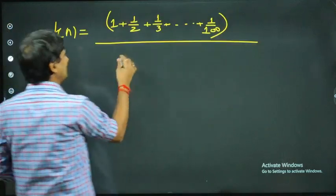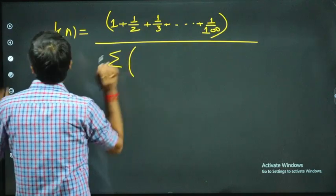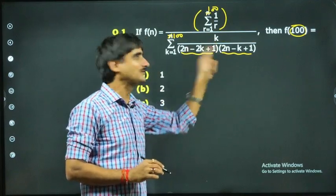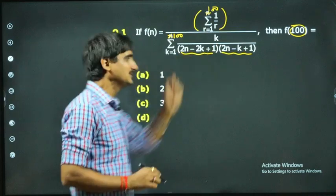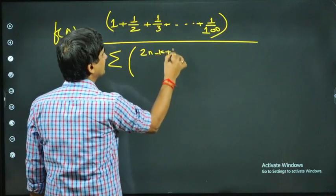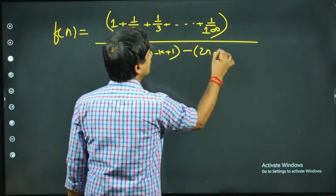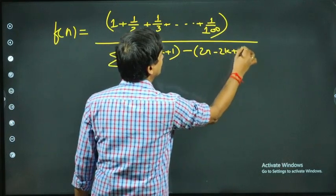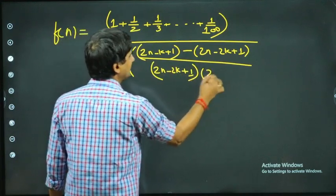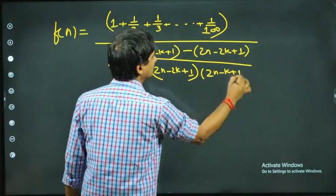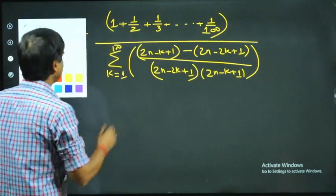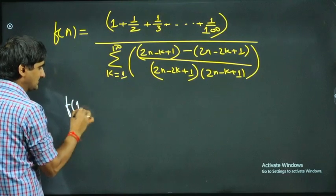For the denominator, I'll write it as a summation. In the numerator write the difference of these two factors — this one is larger, so it's (2n - k + 1) minus (2n - 2k + 1). We retain both factors in the denominator, where k goes from 1 to 100.